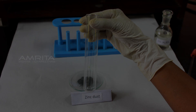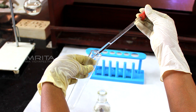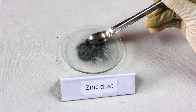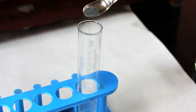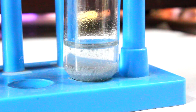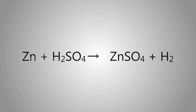Procedure: Take a boiling tube and add a few drops of dilute sulphuric acid using a dropper and place it in a test tube rack. Then add some zinc dust into the boiling tube using a spatula. In this reaction, zinc reacts with dilute sulphuric acid to form an aqueous solution of zinc sulphate and hydrogen gas evolves. That is, Zn + H2SO4 → ZnSO4 + H2.